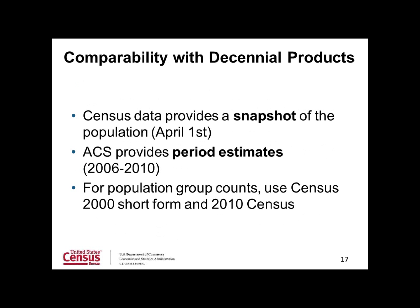The Census is conducted once every 10 years to provide an official count of the entire U.S. population to Congress. Use numbers from the 2010 Census to obtain counts of the population and their basic characteristics: sex, age, race, Hispanic origin, and homeownership status. The Census Bureau collects American Community Survey data from a sample of the population rather than the whole population. It is important to remember all ACS data are survey estimates, and the Census Bureau publishes a margin of error for every ACS estimate to help you interpret reliability.